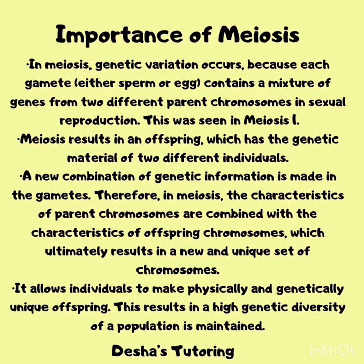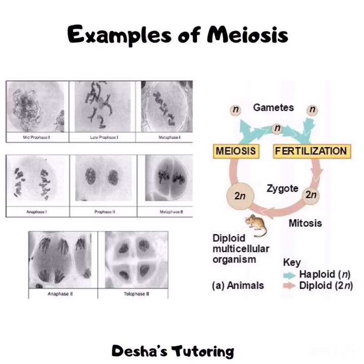Meiosis is very important in living organisms. It fosters genetic variation because each gamete — either sperm or egg — contains a mixture of genes from two different parent chromosomes in sexual reproduction. Meiosis results in an offspring which has the genetic material of two different individuals. Meiosis also fosters new combinations of genetic information made in the gametes, and it allows individuals to make physically and genetically unique offspring. Here are some examples of meiosis: we can see meiosis stages under a light microscope, and also the meiosis chart showing where sperm cells are made, egg cells are made, and spores in fungi can be made from meiosis.